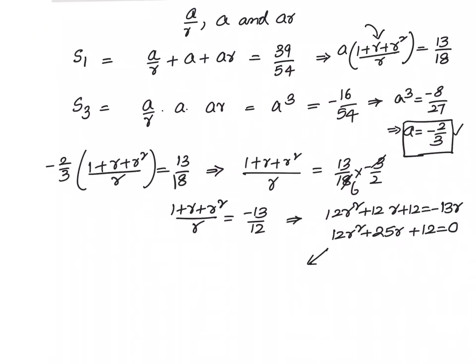Splitting the middle term: sum is 25 and product equals to 12 × 12 = 144. Everything is plus; we can divide them into two parts, 16 and 9. I can write down 12r² + 16r + 9r + 12 = 0.